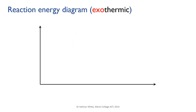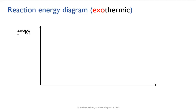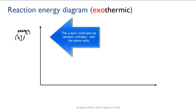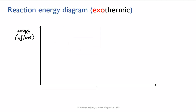We can now put this together to draw a diagram that shows how the chemical energy in a reaction changes during the course of the reaction. Our y-axis represents energy, and the units we use are usually kilojoules per mole — kilojoules being a measure of energy, and mole being a measure of how much chemical we've got. Our x-axis is time, sometimes called the reaction coordinate, representing the beginning, progress, and end of the reaction.